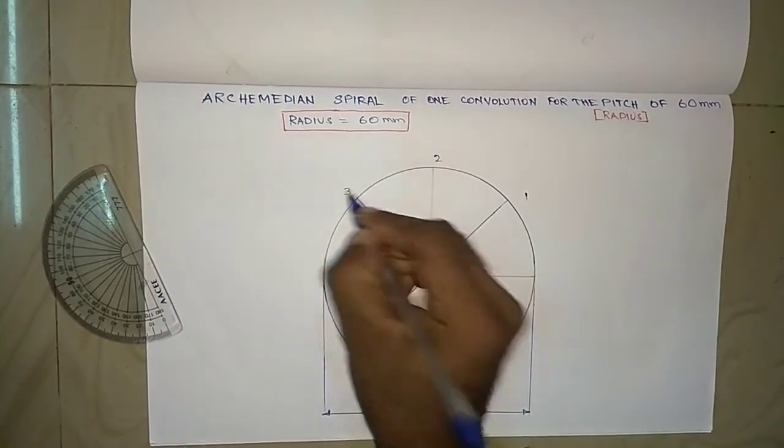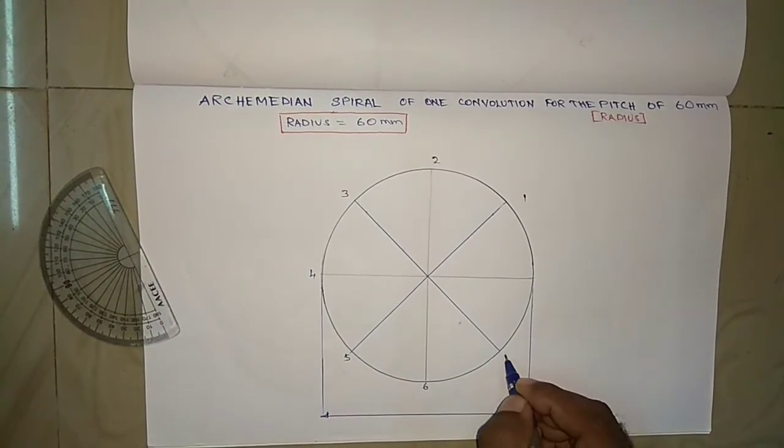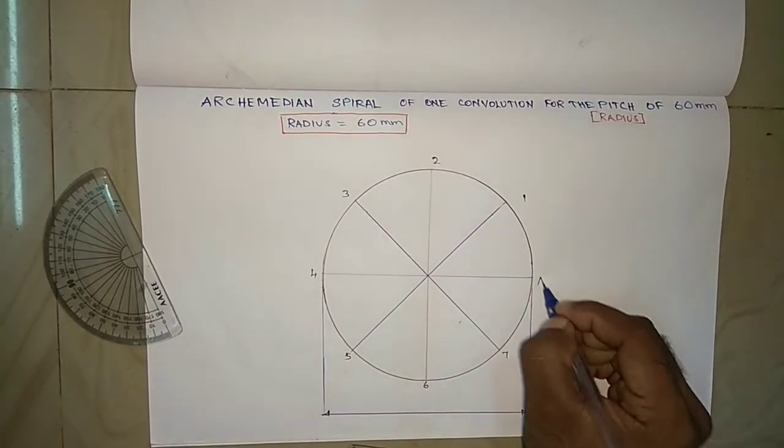Then we have to name them 1, 2, 3, 4, 5, 6, 7, 8 or A.